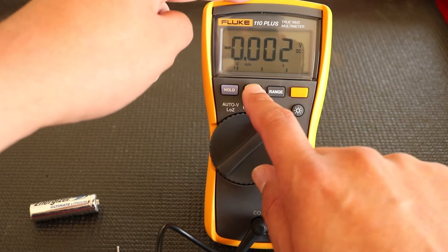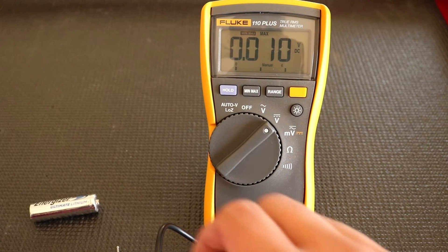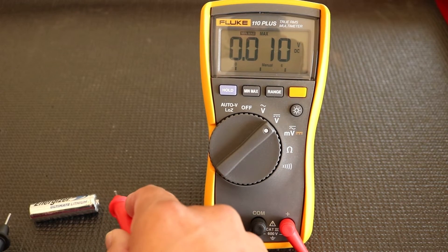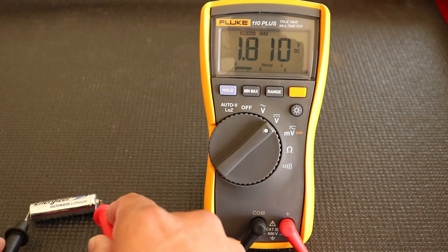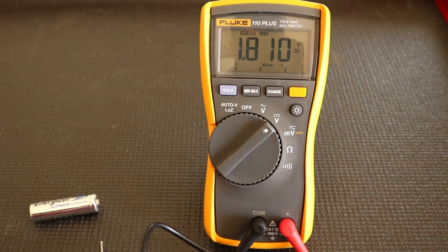I'm going to press the button once, and this puts us at the max reading. I'm going to take our leads, I'm going to test this battery right here. And we have a max reading of 1.810 volts DC.